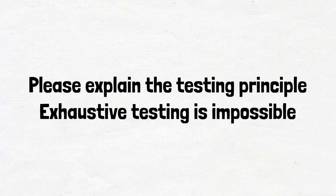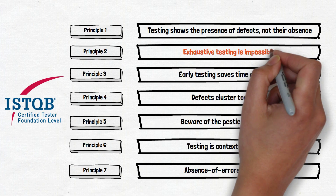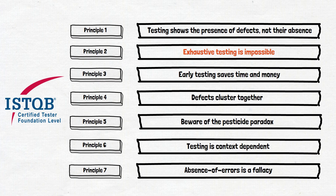Hi everyone! In this video we'll try to find the answer to the question: please explain the testing principle 'exhaustive testing is impossible.' Exhaustive testing is impossible is the second principle defined in the ISTQB, and the explanation of it is very similar to the first principle with small differences.